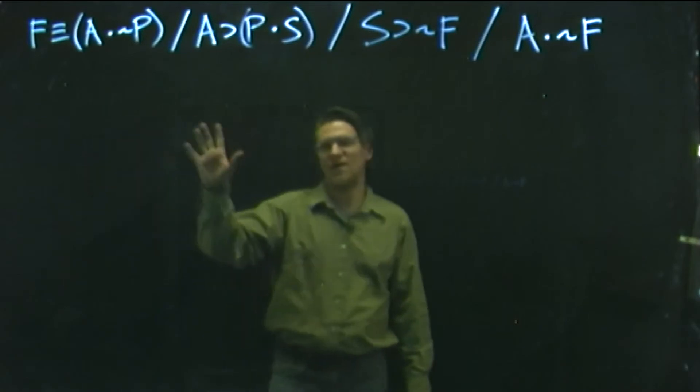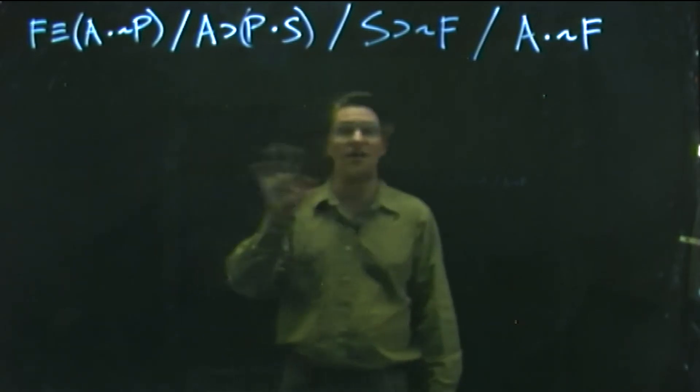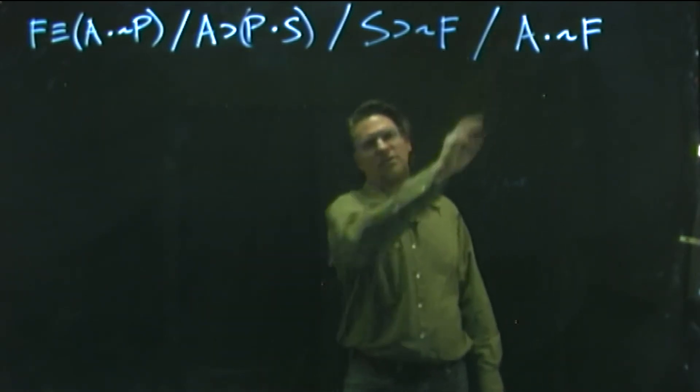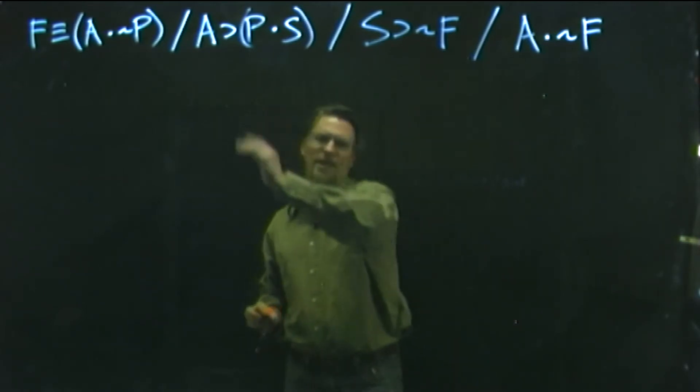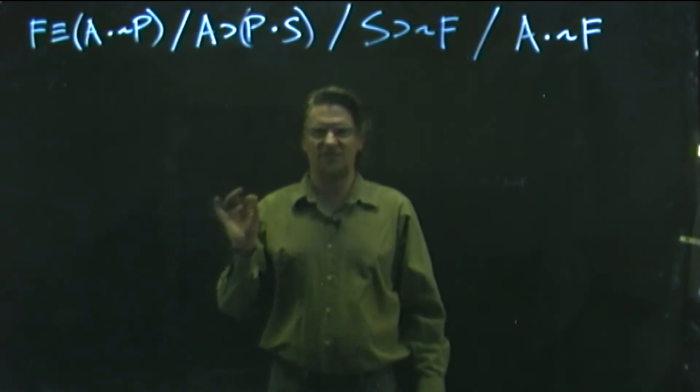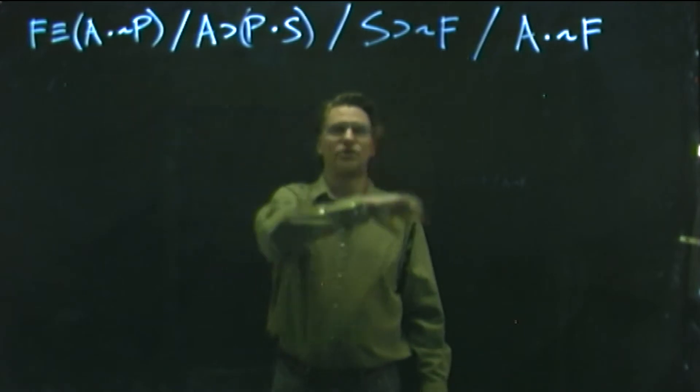And I want to emphasize that what we're looking at here is not an argument. This is 1, 2, 3, 4 claims. There's no double slash here at the end. So these are just 4 claims, and the question here is, are they consistent? In other words, remember back from earlier in Chapter 5, the question about consistency is, could they all be true at the same time?